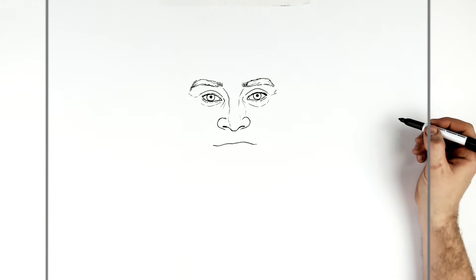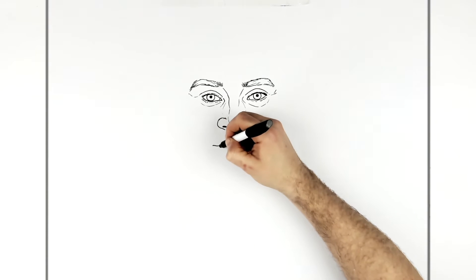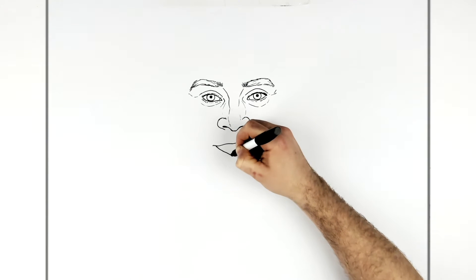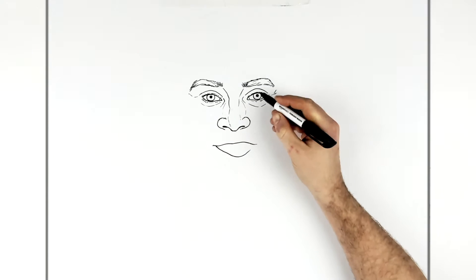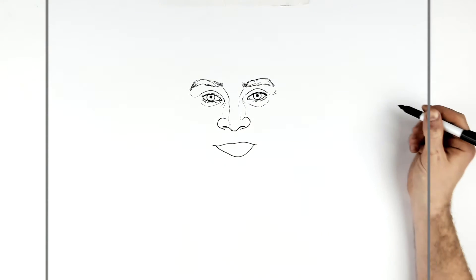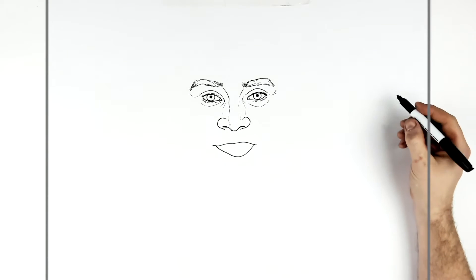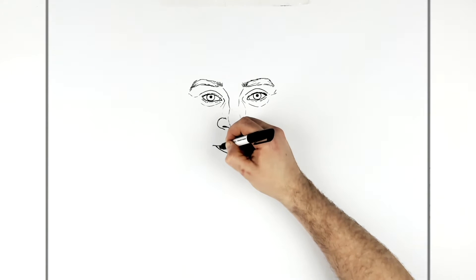And then bottom lip. So it's open. His mouth is relatively open. So it comes down, around, and then up here. So in here we have teeth and gums and stuff. So we got like a bit of a shadow in the side of his mouth here.